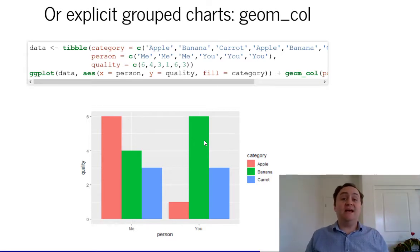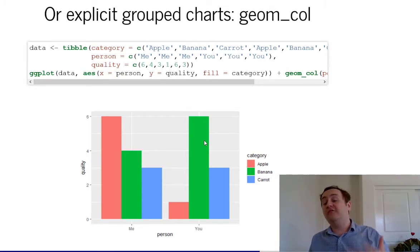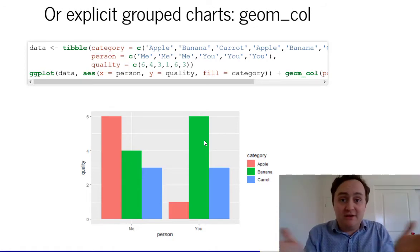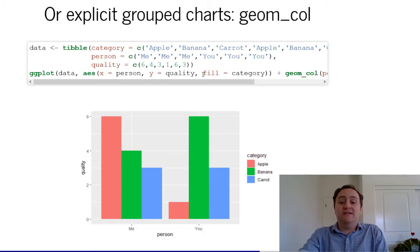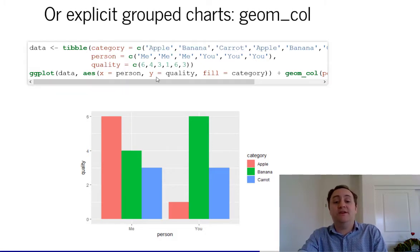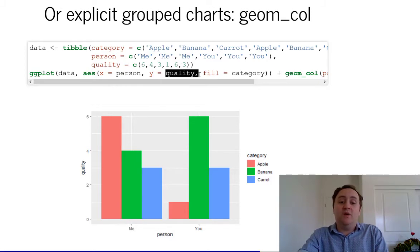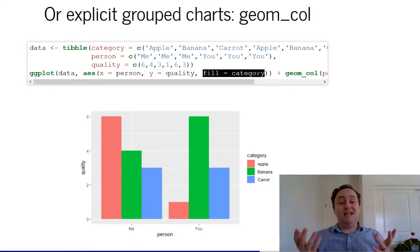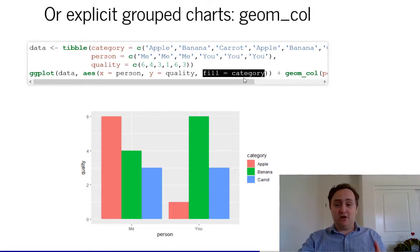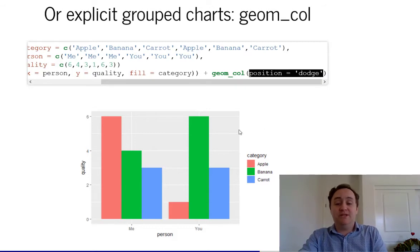One thing ggplot is very good at that Excel is not is groupings. You can have any sort of axes you want, so if you want something to be colored, filled, or shaped differently by groups, all you have to do is tell ggplot the attribute and which variable it should vary by. Here I want a different fill color for each category — apple, banana, and carrot. I say on the x-axis I want the person, on the y-axis the quality, and the fill color to differ by category. I've done a column geometry here with position equals dodge, which puts the groups side by side rather than stacked on top of each other.